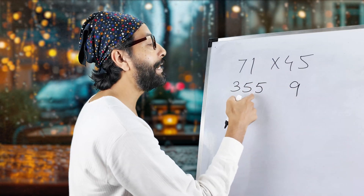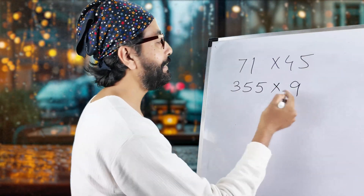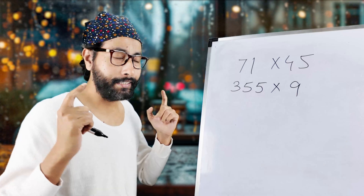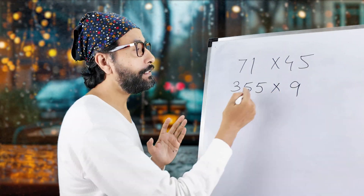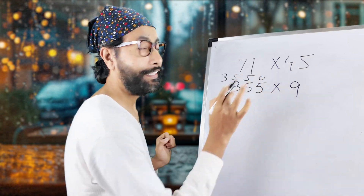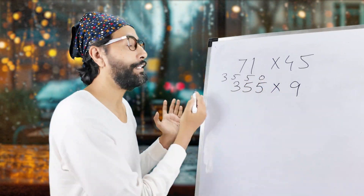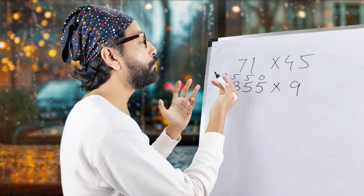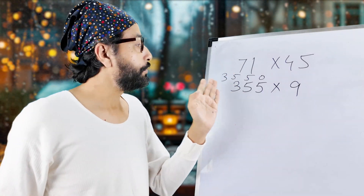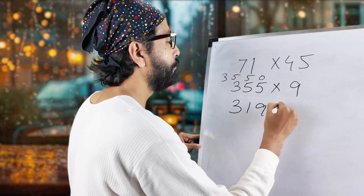Because that 10 has already been multiplied on this side. So, 355 multiplied by 10 means 3550. In our mind: 3550 minus 355. That will be the multiplication of 9. So, 3550 minus 355 — removing 300 gives 3250, 50 already removed, so 3200. Now remove another 5: 3, 1, 9, 5. The answer is 3195.